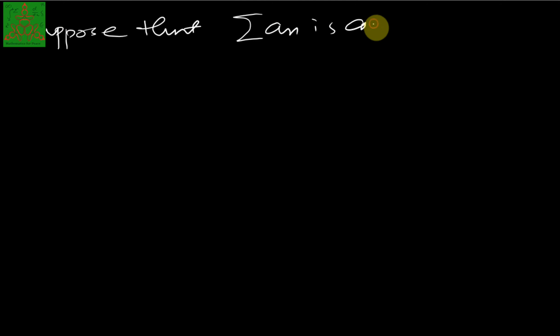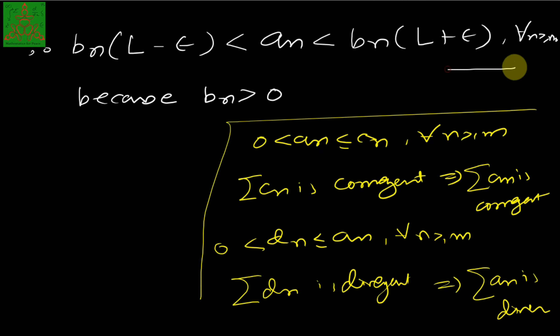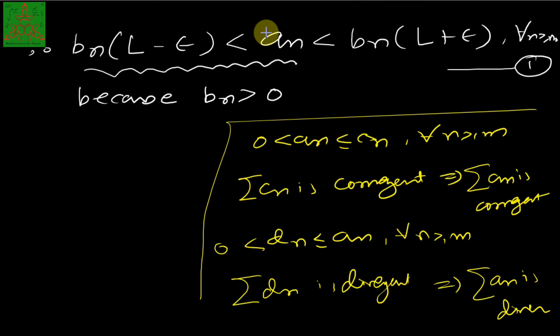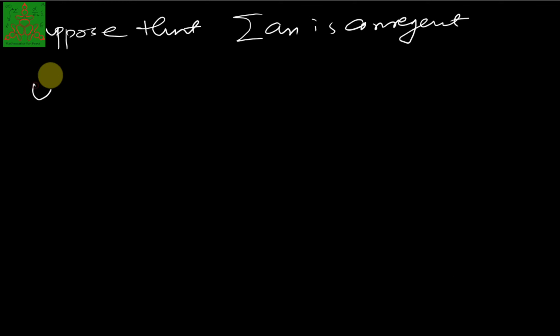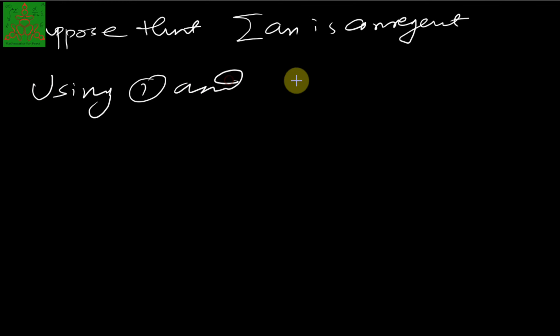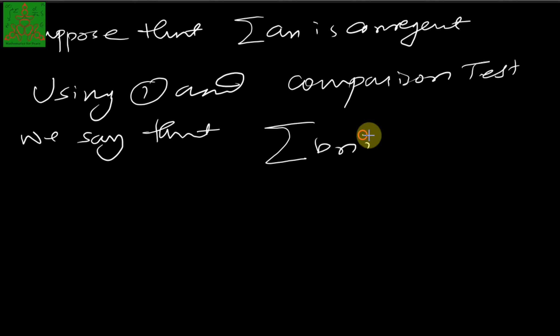Suppose that the summation of An is convergent. Our objective is to prove that Bn is also convergent. Using inequality one — the inequality Bn(L − epsilon) ≤ An — since An is convergent, its smaller series is also convergent by the first statement of the comparison test. So, using inequality one and the comparison test, we conclude that the summation of Bn is convergent.